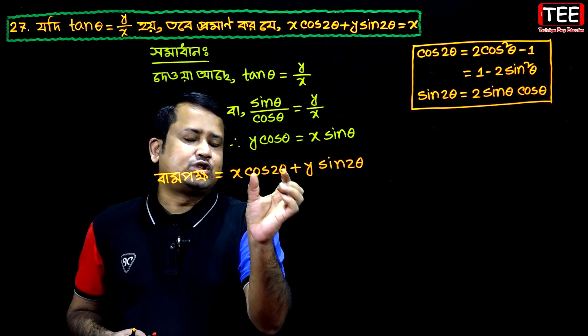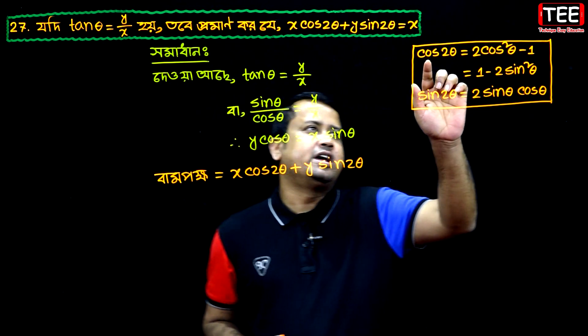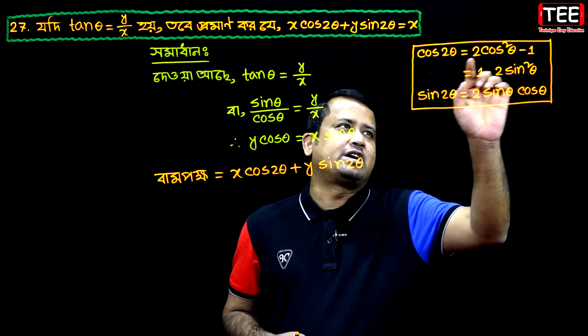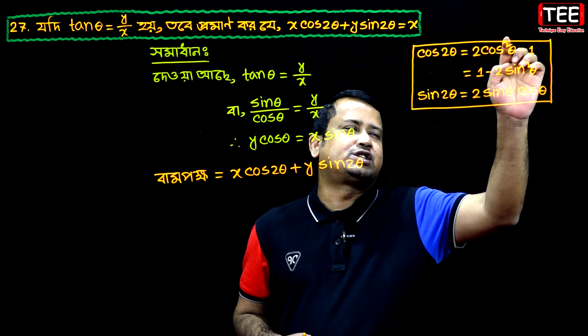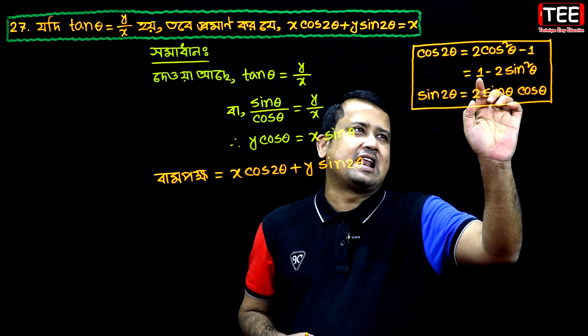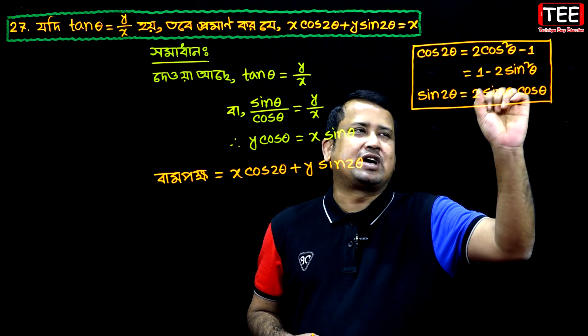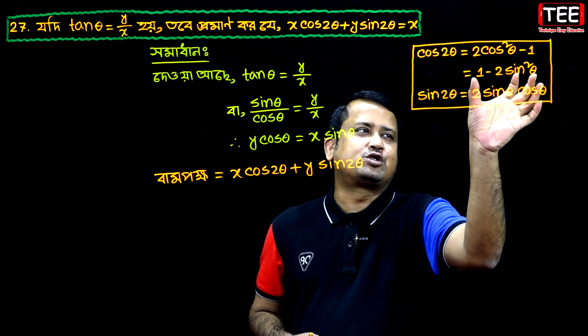Now, cos 2θ equals 2cos²θ minus 1, which also equals 1 minus 2sin²θ. This involves a sin θ term.